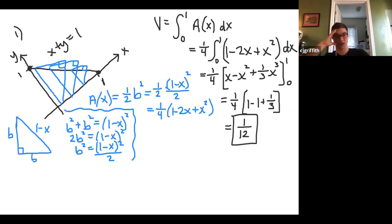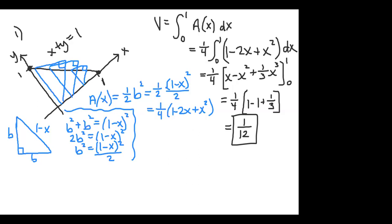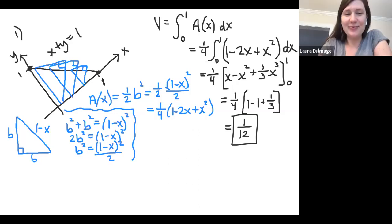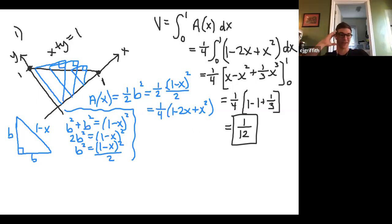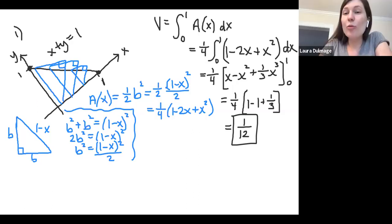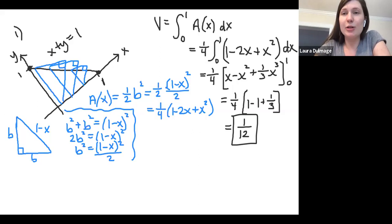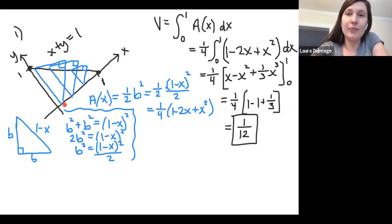These are definitely more challenging problems. The more challenging part is the geometry behind it. The cross section was perpendicular to the x-axis and the hypotenuse was in the base. I just redrew one of those triangles flipped over so we could see it a little better.